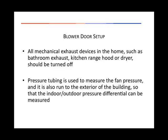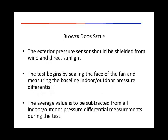Pressure tubing is used to measure the fan pressure and is also run to the exterior of the building so that the indoor-outdoor pressure differences can be measured. The exterior pressure sensor should be shielded from wind and direct sunlight. The testing begins by sealing the face of the fan and measuring the baseline indoor-outdoor pressure differential.